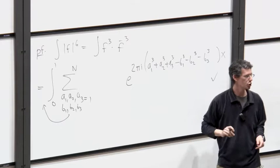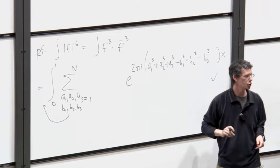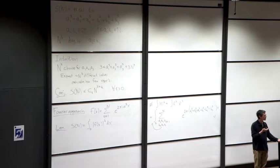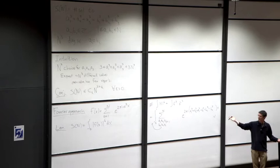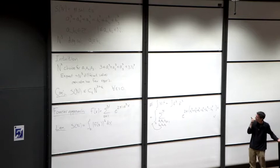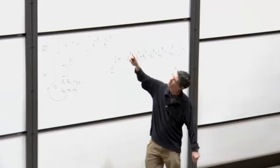That's a cute trick. But it raises the question: did we actually make any progress toward understanding the number of solutions by rewriting it in this way? This is not so clear. Let's start trying to use Fourier analysis to estimate this integral and see what we can learn.